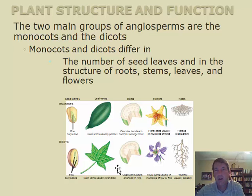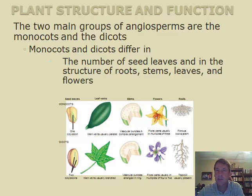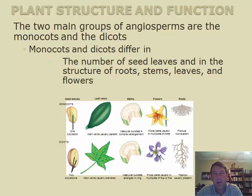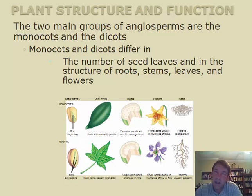The name monocot actually comes from the seed leaf — the initial embryonic tissue that grows inside the seed when the plant starts growing. Within that seed, the plant will either have one structure or two structures that come off of that new tissue, and those are called cotyledons, which means 'seed leaf.' In dicots there are two seed leaves, and in monocots there is one.